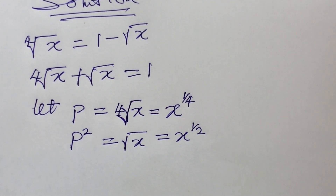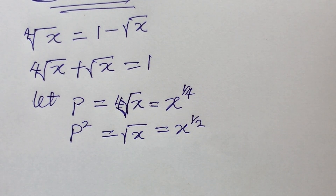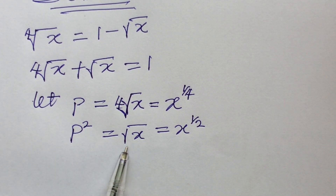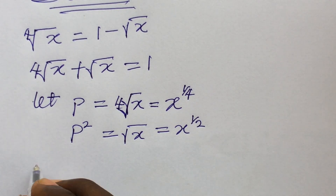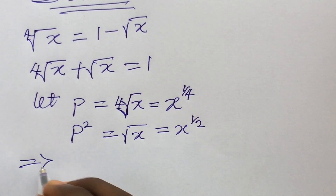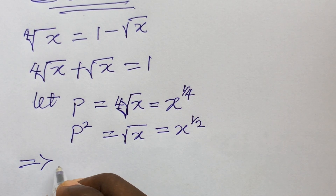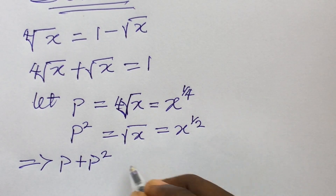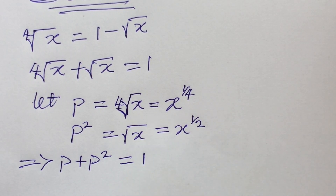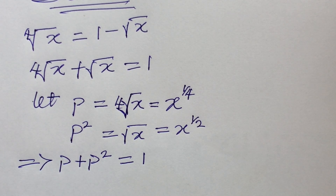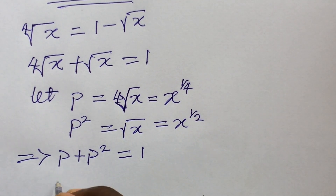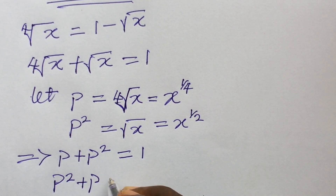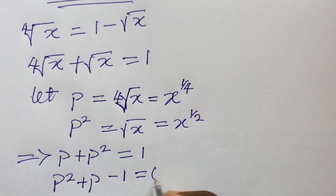Having established this, we go back to our equation and replace the fourth root of x and the square root of x with p and p squared. Our equation becomes p plus p squared equal to 1. Rearranging this quadratic equation gives us p squared plus p minus 1 equal to 0.